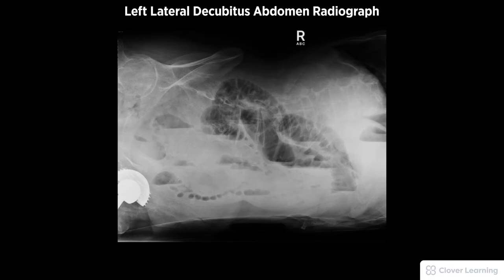A left lateral decubitus abdominal radiograph should be free of motion and rotation for the purpose of diagnostic visualization of free air or fluid levels within the abdominal cavity.